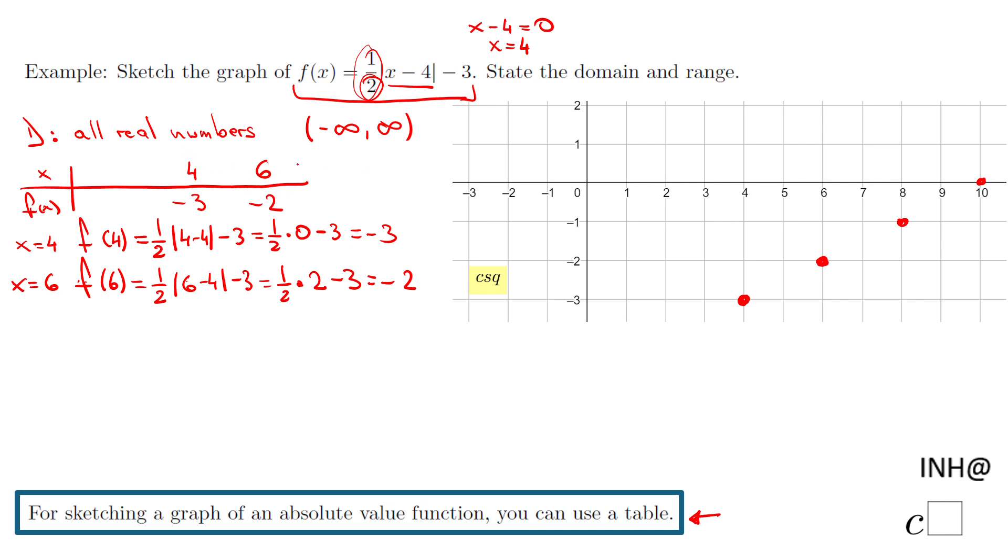I'm also gonna go to the left and use x equals 2. I'm gonna have f of 2, which is one-half times the absolute value of the quantity 2 minus 4 minus 3. So we have one-half, 2 minus 4 is negative 2, absolute value of negative 2 is still 2. You notice we get the same thing. We get that negative 2.